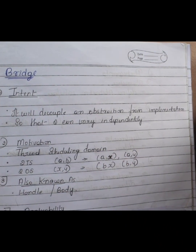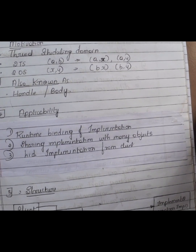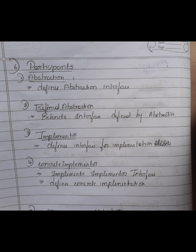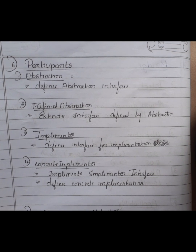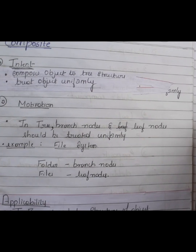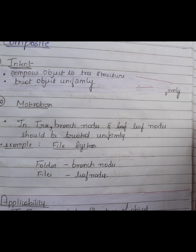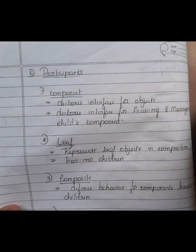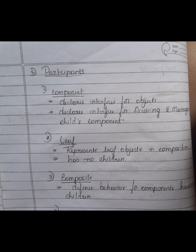The next question is the Bridge pattern — cover intent, motivation, applicability, structure, participants, consequences, and implementation. Next comes Composite — same sections: intent, motivation, applicability, structure, participants, consequences, and implementation.